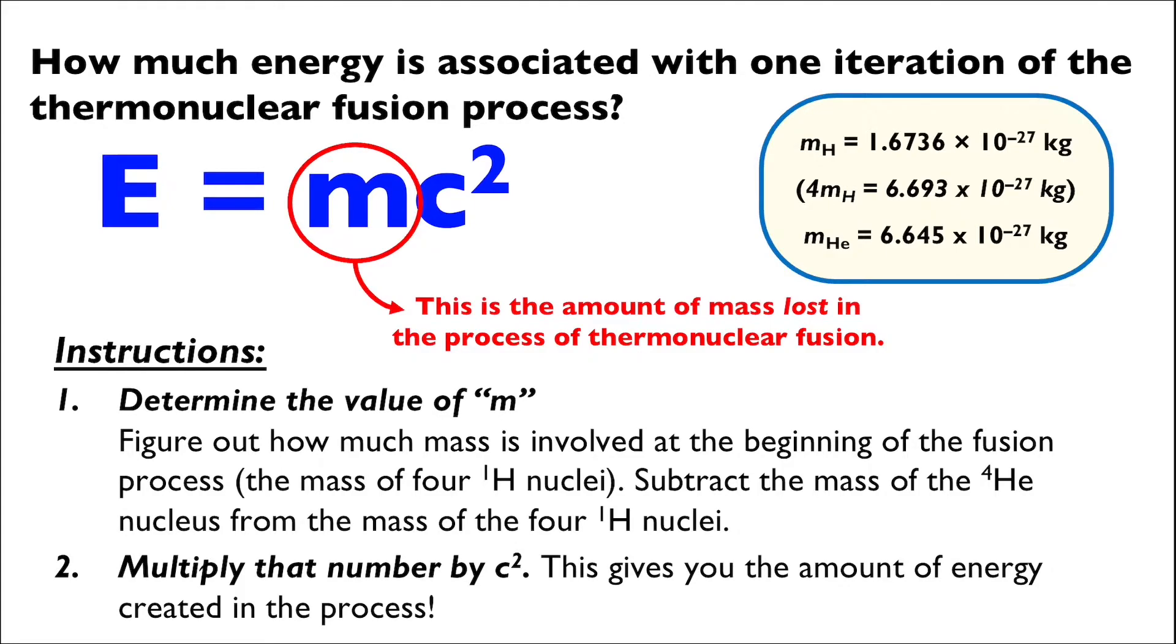This will give us the amount of energy created in the process of fusing hydrogen into helium. And when we say created, we really mean converted into existence from the mass that was lost. That mass became this energy. To do the actual math itself, we start with E equals MC squared, where, as we mentioned before,